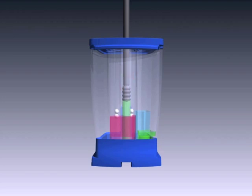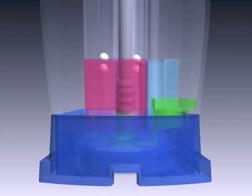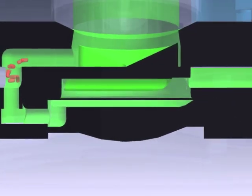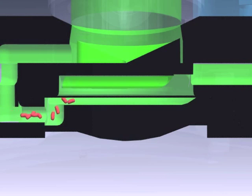The valve body rotates to position two and dispenses the sample through the active area. Here we see the organisms being trapped on the filter while the remaining fluid is dispensed into a waste chamber.